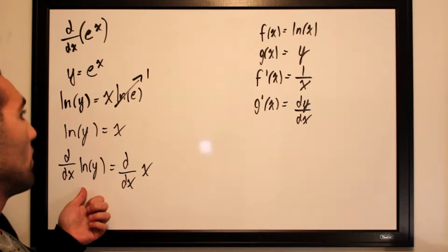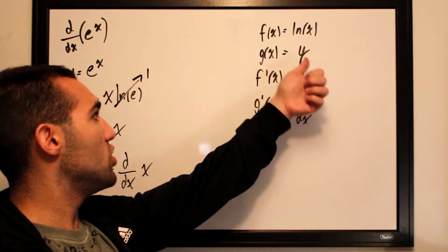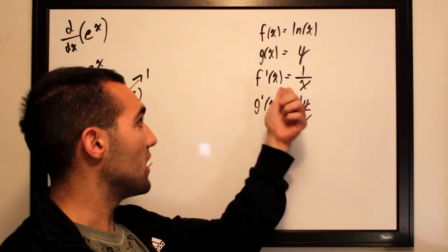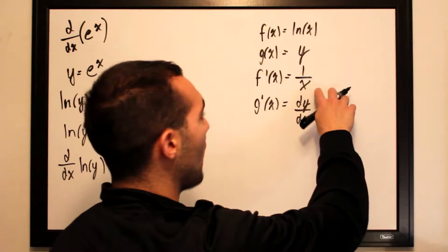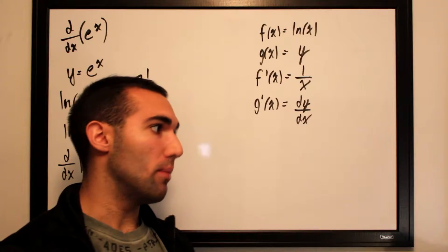If we wanted to take the derivative of this, all we would need to do is plug in g wherever we see x in our f prime. So this will be 1 over y, and then multiply that entire expression by g prime, which is dy/dx.